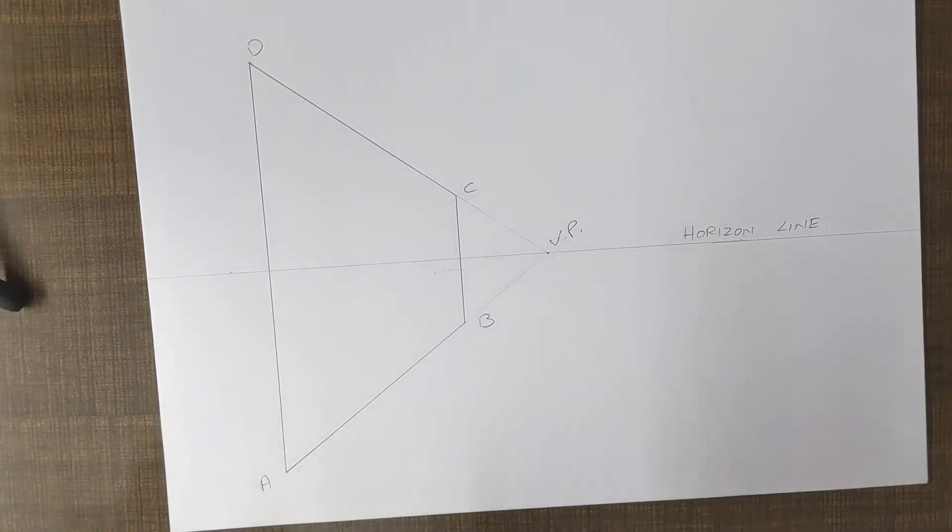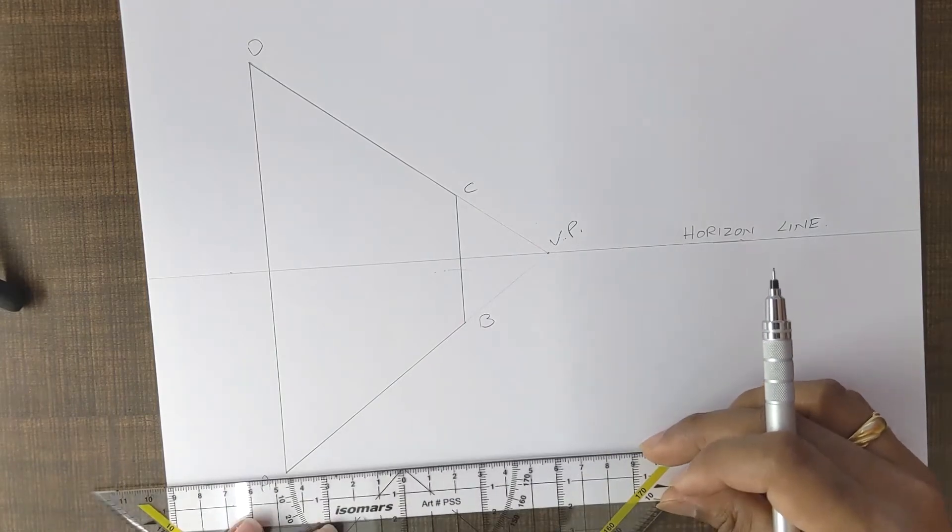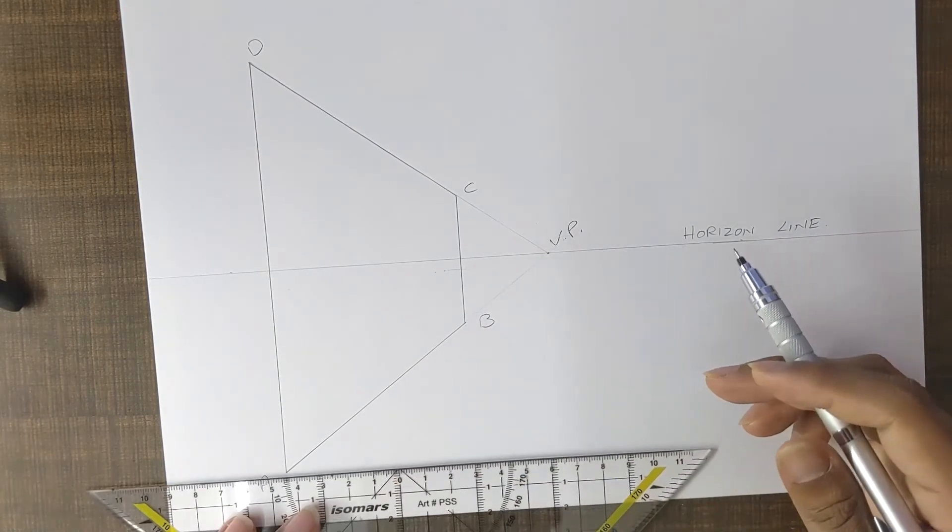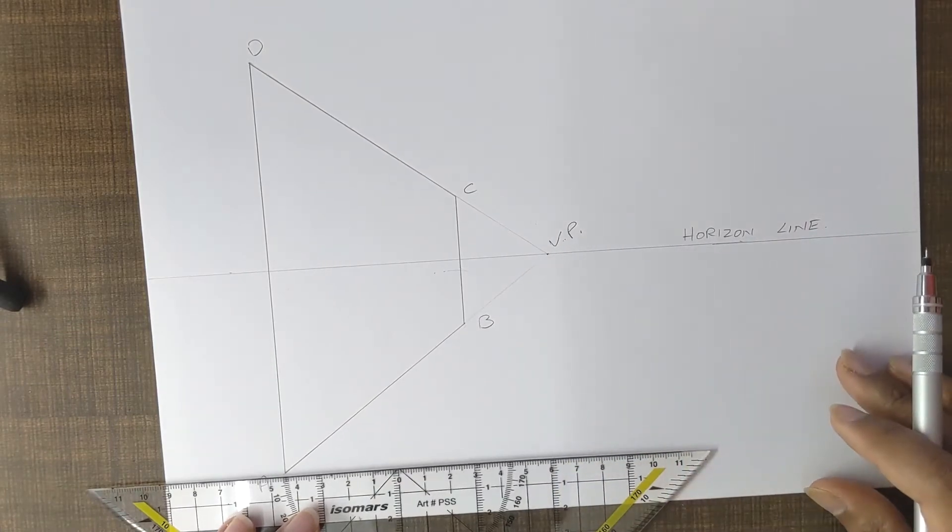So step one to divide this plane into odd numbered sections is to draw a horizontal line from point A which is parallel to your horizon line.